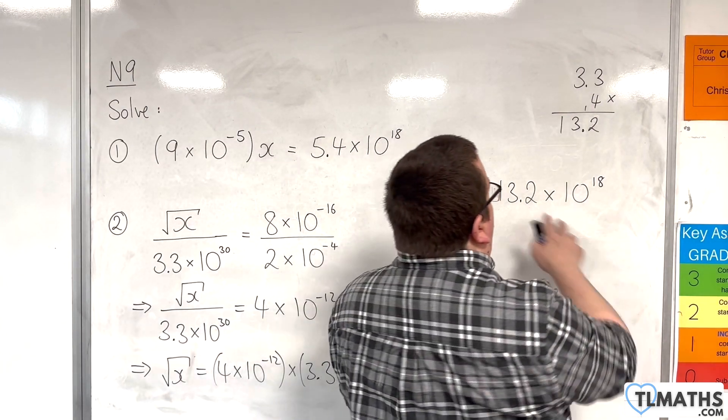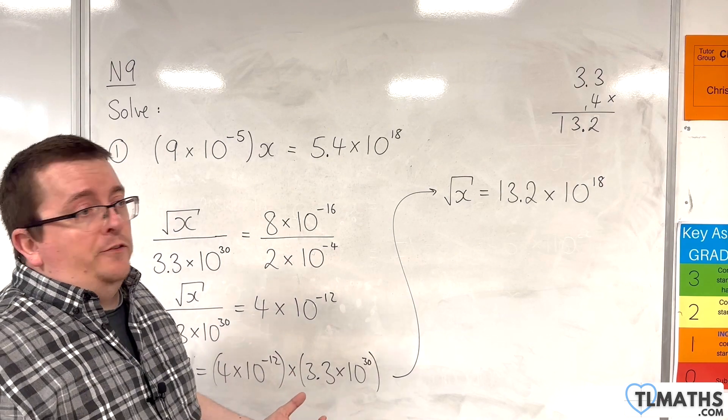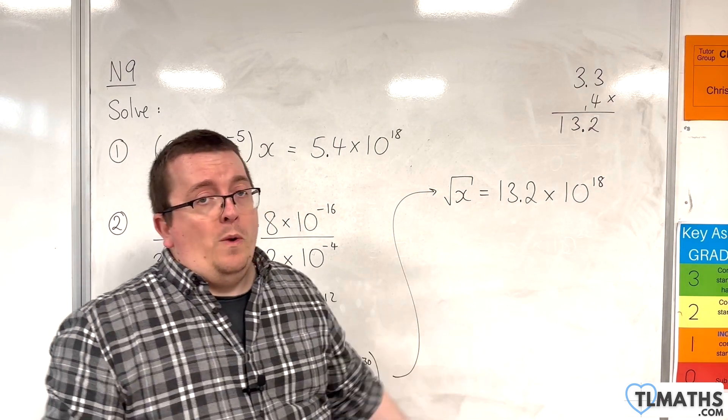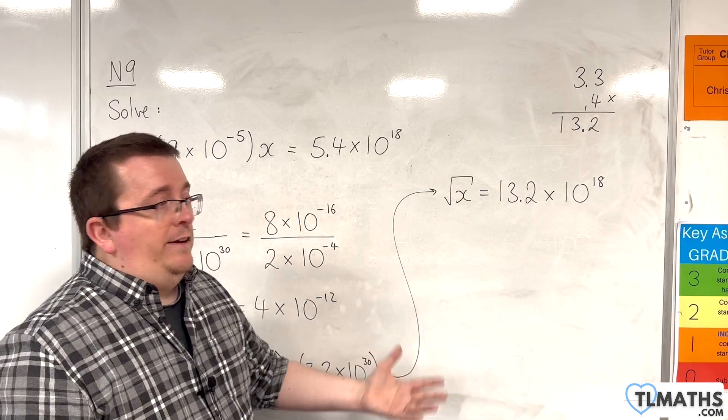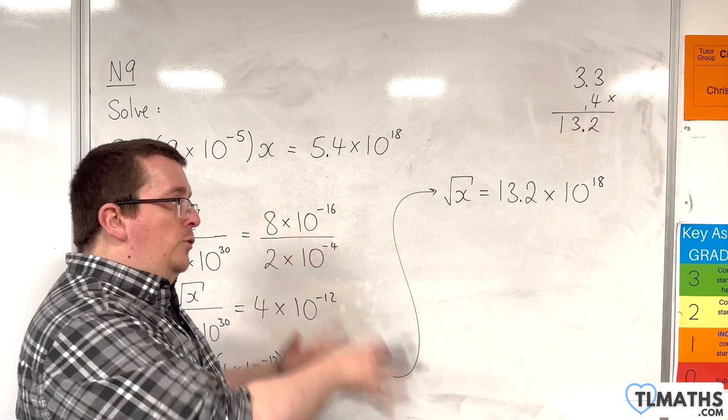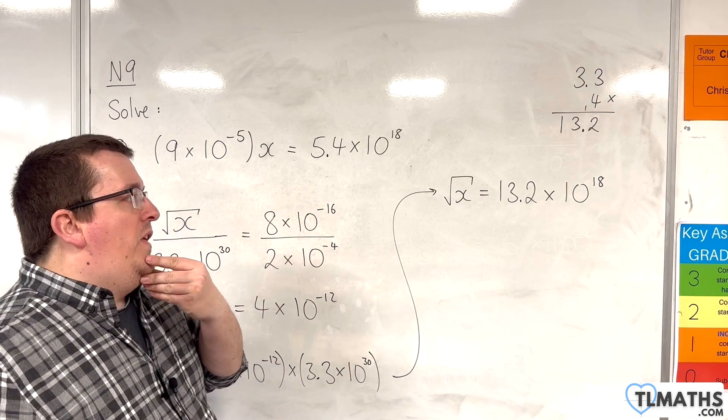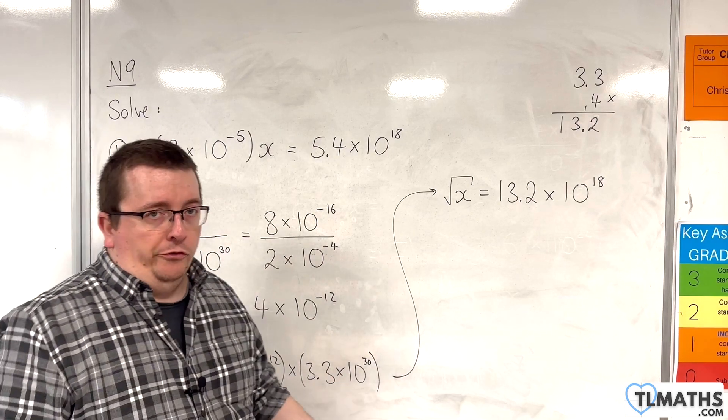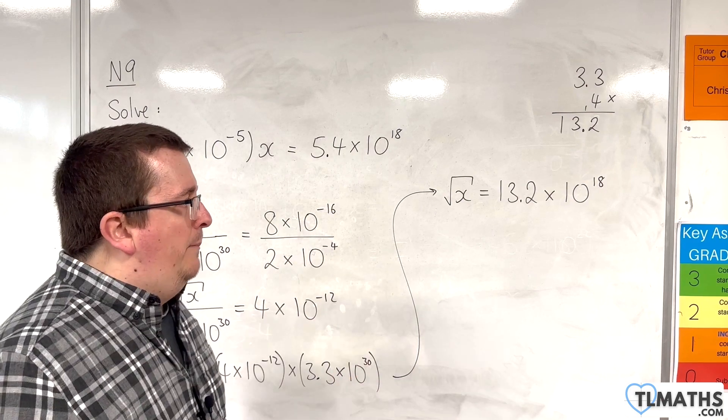Now, this isn't currently in standard form. I don't need it to be in standard form at this point, because what I'm going to do is I'm going to square both sides. So, I could put it into standard form and then square, or I could leave it as it is, square it, and then put the answer into standard form. I think it's probably good practice to put it into standard form before squaring, just so it gives us added practice of writing things in standard form.